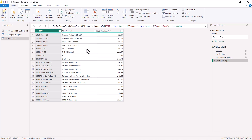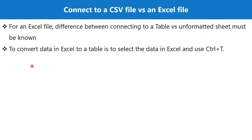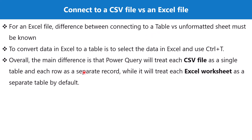From an exam perspective, remember a few key points. For an Excel file, know the difference between connecting to a formatted table versus an unformatted sheet. If you are working in Excel and want to convert an area into a table, you can use the Excel menu option or simply select the area and press Ctrl+T — that area will be converted into a formatted table. Also remember that in Power Query, each CSV file is treated as a single table.